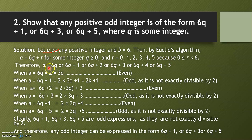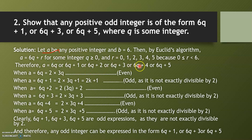Therefore, a can be written as 6q, 6q + 1, 6q + 2, 6q + 3, 6q + 4, or 6q + 5, by placing r = 0, 1, 2, 3, 4, 5 respectively in the expression a = 6q + r.